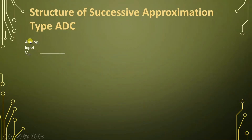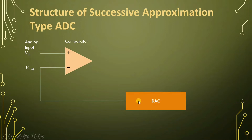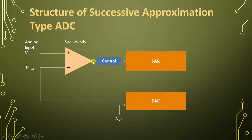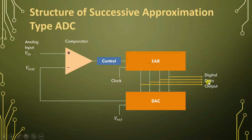The input analog voltage is given to a comparator and connected to the positive terminal of the comparator. The negative terminal of the comparator is connected to the output of the digital-to-analog converter, and the DAC generates VDAC output with respect to reference voltage. The output of the comparator is given to the successive approximation register (SAR), which acts as the control signal. With respect to the clock, the successive approximation register generates digital data that is input to the DAC and is also latched at the output side as digital data.